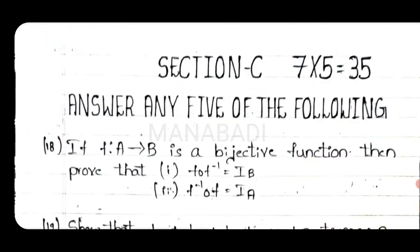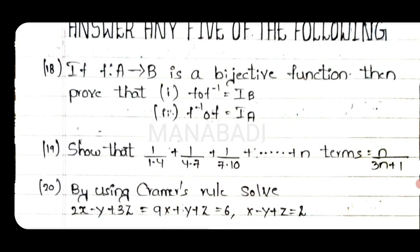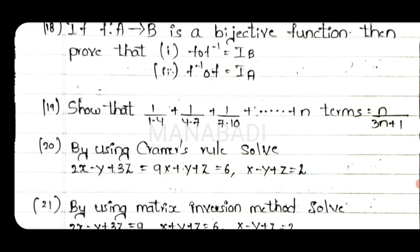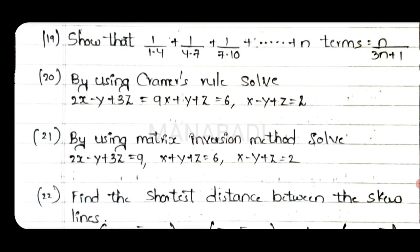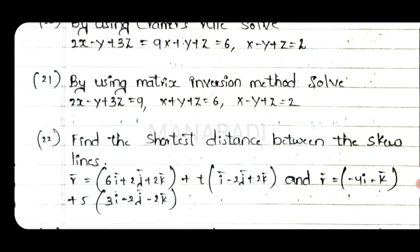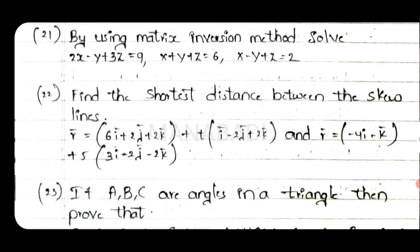Section C — I have 5 questions, 5 marks each. Answer 5 of the following. If f of A maps to B is a bijection, then prove that. I have 5 functions. Next, the 19th question: show that 1 by 4.7 plus 1 by 7.10 up to n terms equals n by 3n plus 1. Next, matrix inversion solution — we will show you this equation. We will search in the channel. We will find the shortest distance between the lines.